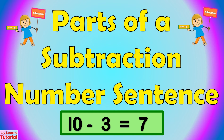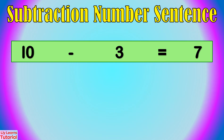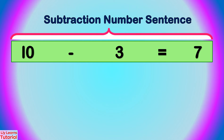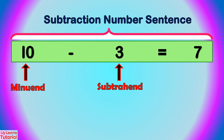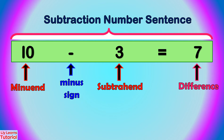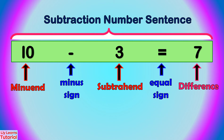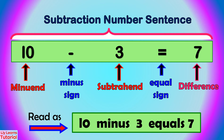Let's look at the parts of a subtraction number sentence. This is a subtraction number sentence: 10 is the minuend, 3 is the subtrahend, 7 is the difference. This is a minus sign and this is an equal sign. We can read this as 10 minus 3 equals 7.